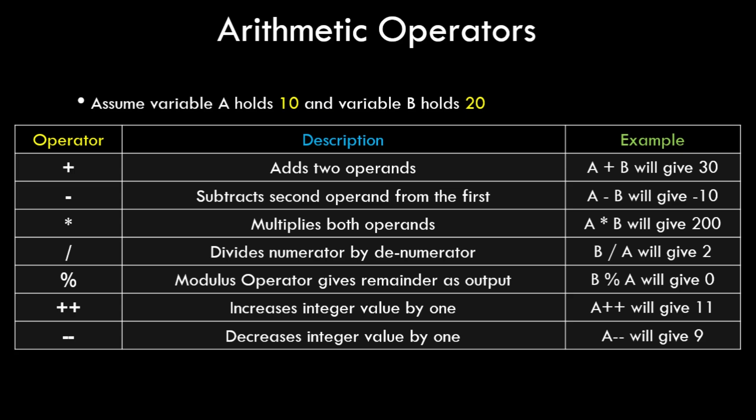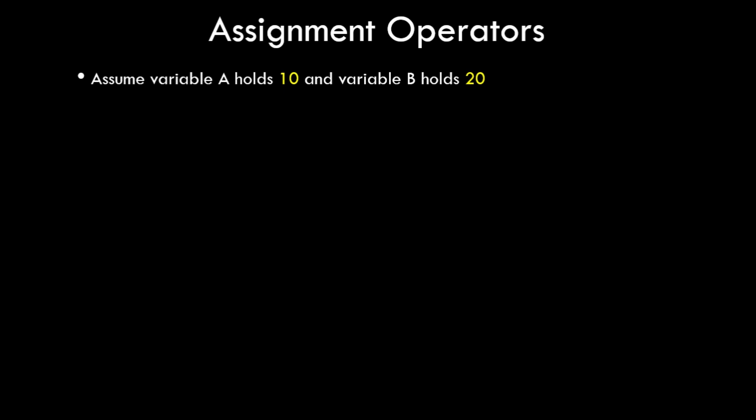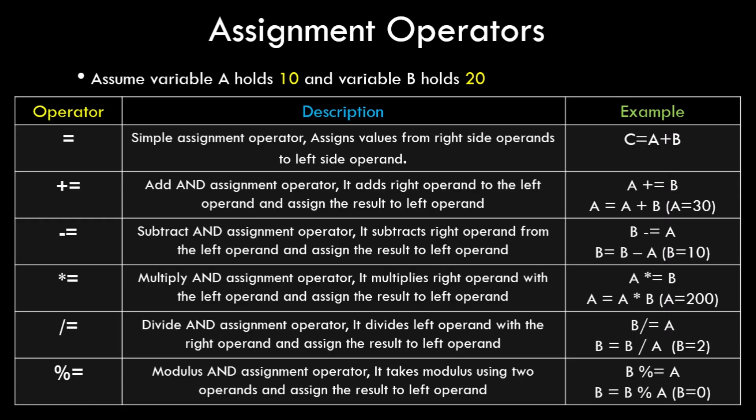That's it for arithmetic operators. Let's look at assignment operators. Assuming a holds 10 and b holds 20, the first is the simple assignment operator. For example, c = a + b assigns the result of a + b (which is 30) to variable c. The assignment always goes from the right-side operand to the left-side operand.